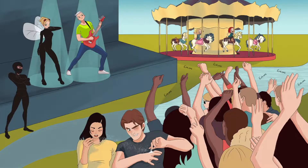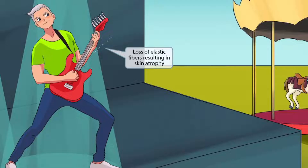The skin can also lose elasticity, resulting in skin atrophy. To help you remember this, we've shown the guitarist jamming out so hard that one of his elastic guitar strings has snapped. If we zoom up on him, you can see that loose string a bit better. So Onchocerca volvulus can result in loss of elastic fibers, resulting in skin atrophy.